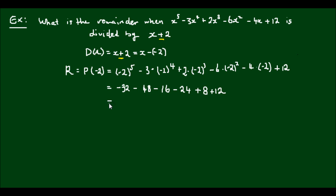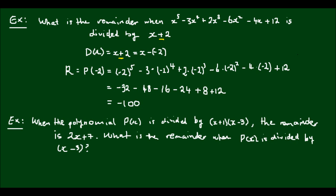So negative 32 minus 48 is going to give us negative 80. Negative 80 minus 16 is negative 96. Negative 96 minus 24 is negative 120, plus 8 is minus 112, and plus 12 is minus 100.